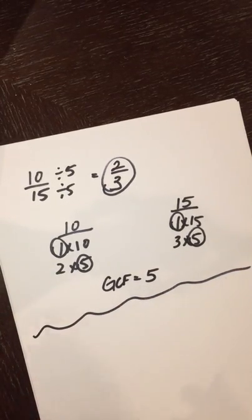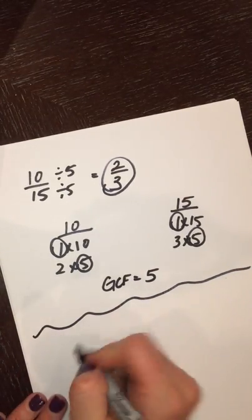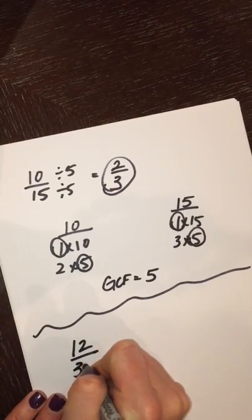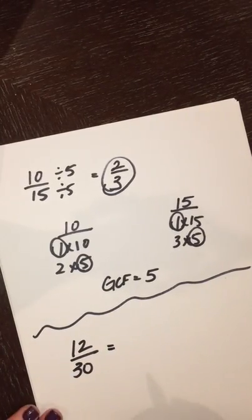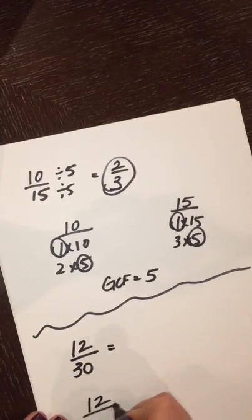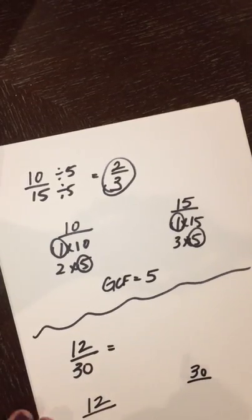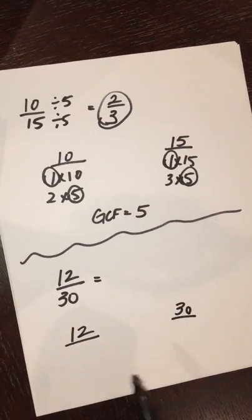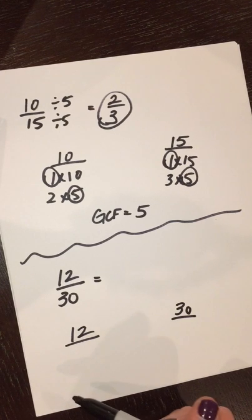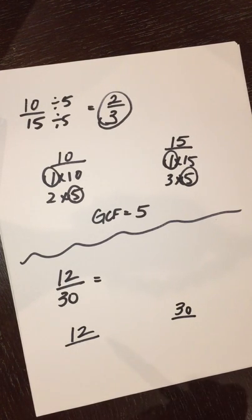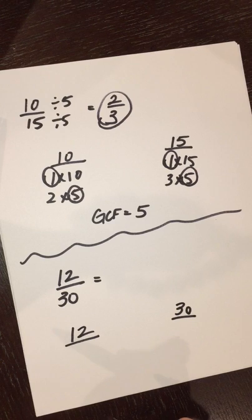So now we're going to do one a little bit differently. Let's say I have a number that looks like this, twelve-thirtieths. I want to find the simplest form. I could go ahead and just do it this way, and do it the way I've been doing it, and find the common factors, and then find the greatest common factor. That's totally fine. If that works for you, that's great. But you can take a shortcut.